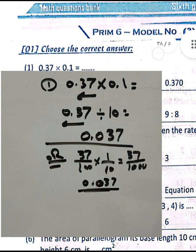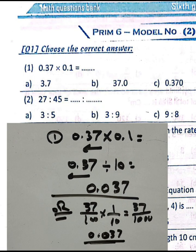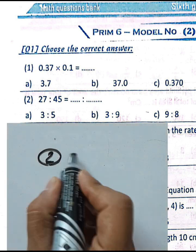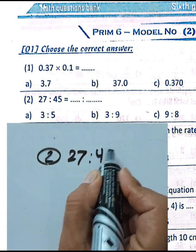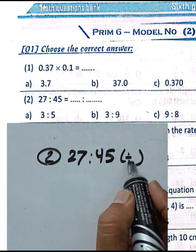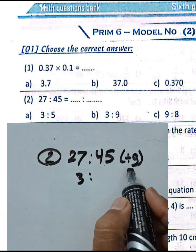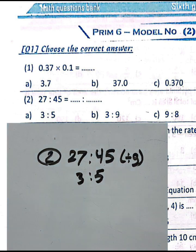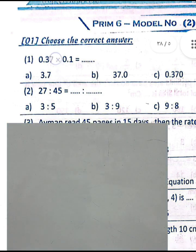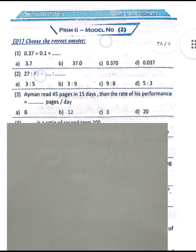Question number two: the ratio between 27 and 45. We find the highest common factor between the two numbers, which is 9. Twenty-seven divided by 9 equals 3, and 45 divided by 9 equals 5, so the ratio is 3 to 5.